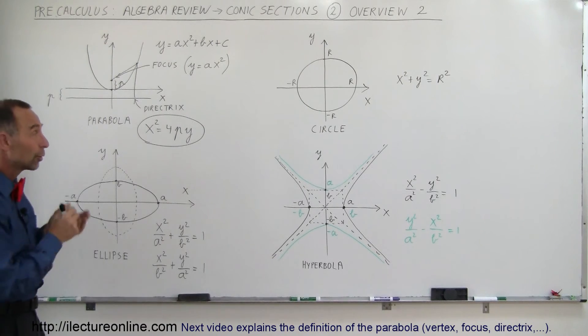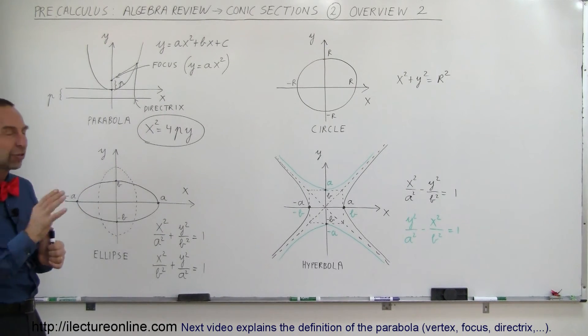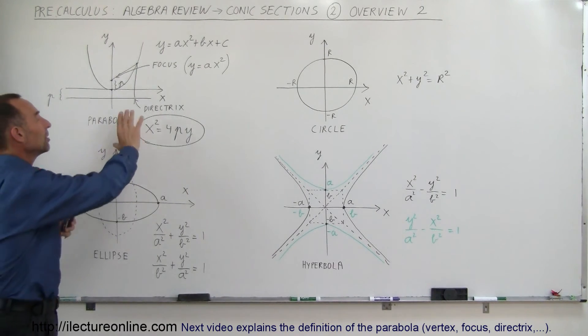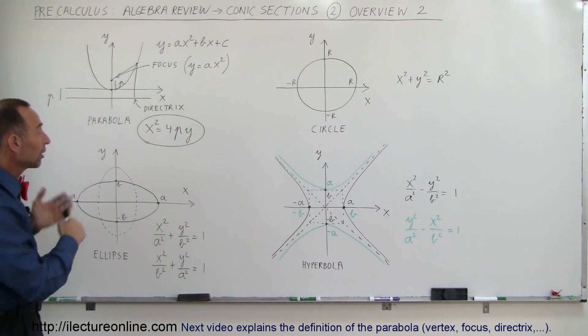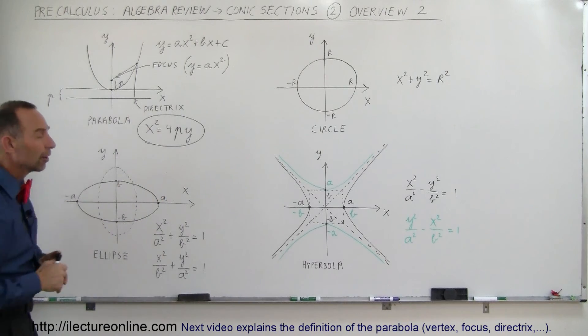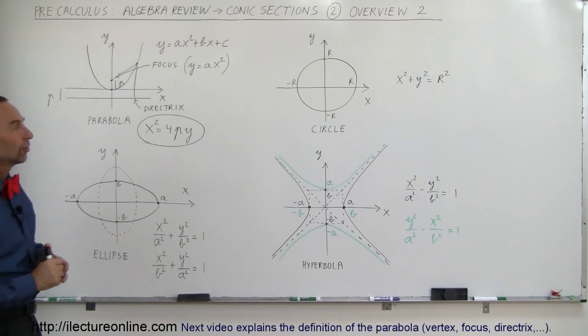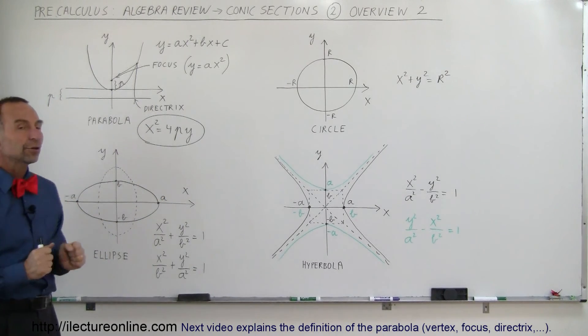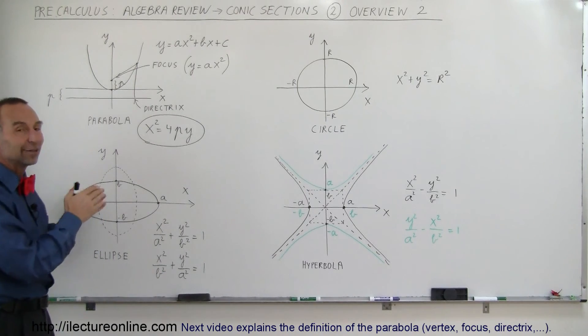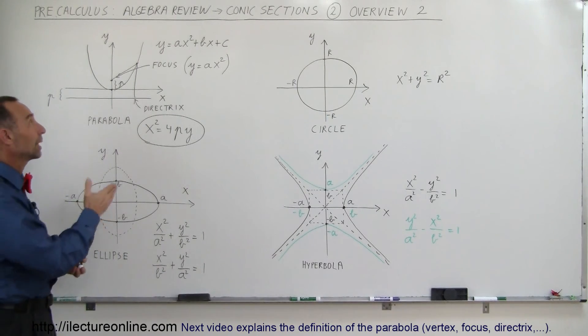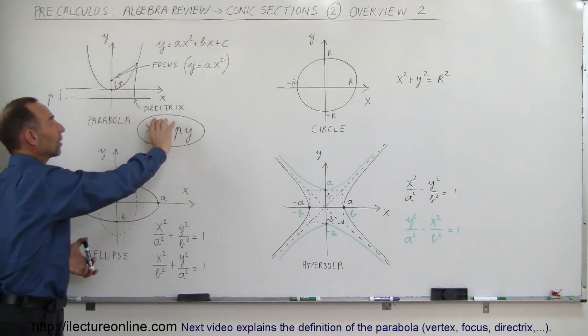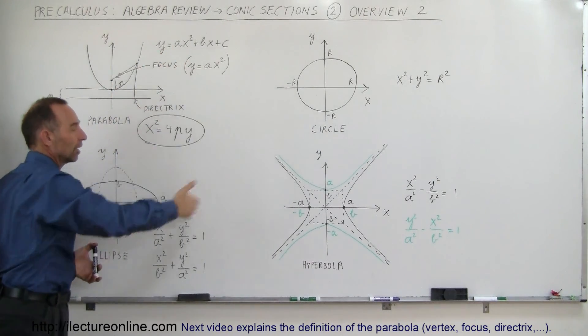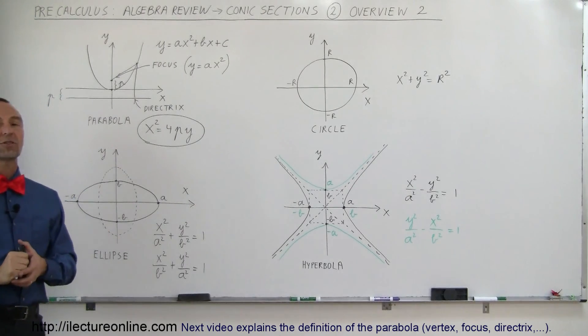And now in the next videos, we're going to go through the detail, explaining very carefully how to come up with these equations, what they mean, and how to solve the problems that you'll end up having to solve regarding these four conic sections. So at least this gives you a nice quick overview. We're going to explain exactly where these things come from, how to calculate these equations and how to relate this equation to that equation for the other three conic sections as well.